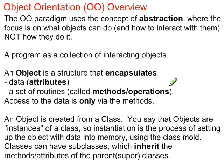An object is created from a class. A class is the framework from which the objects are instantiated. We create instances of the class and put that into memory, which is the object. Classes also have subclasses, and the concept of that is you inherit methods and attributes from a parent or super class, enabling you to take advantage of existing classes where you can add to them or modify them.